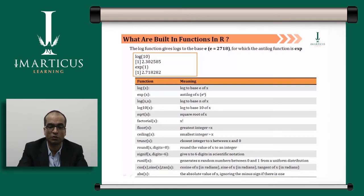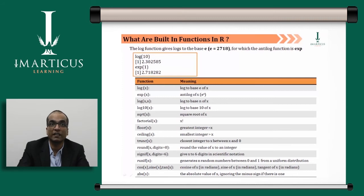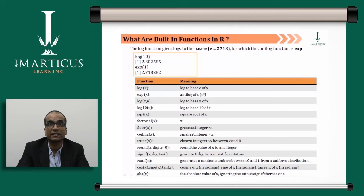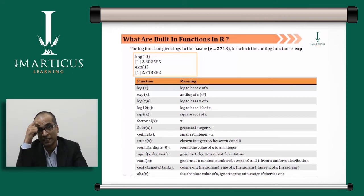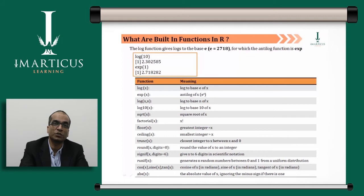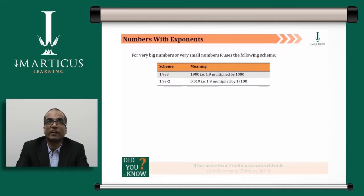To create a vector of random numbers from a uniform distribution, use runif(n), where n is how many numbers you want. cos(x) computes cosine of x in radians, sin(x) computes sine of x in radians, and tan(x) computes tangent of x in radians. abs(x) returns the absolute value — for example, abs(-2) returns 2, removing the sign.